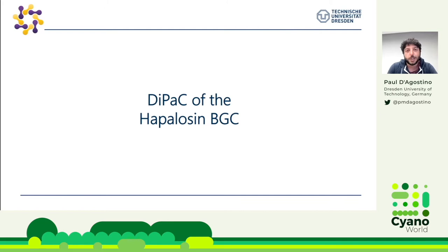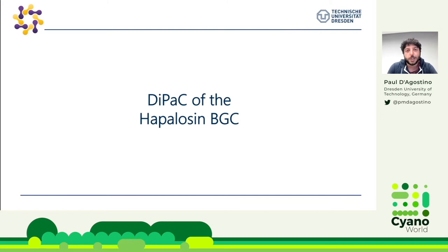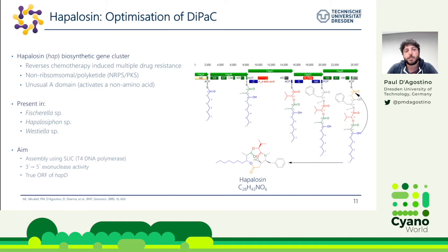I will now talk about my first example: the hapilosin biosynthetic gene cluster. Hapilosin is a known molecule identified back in the 1980s, and the biosynthetic gene cluster is something I worked on in Australia. Hapilosin reverses chemotherapy-induced multidrug resistance. Its biosynthesis occurs via an NRPS-PKS system, and most importantly, it has an unusual adenylation-ketoreductase-dehydratase domain that incorporates an alpha-keto acid rather than an amino acid.